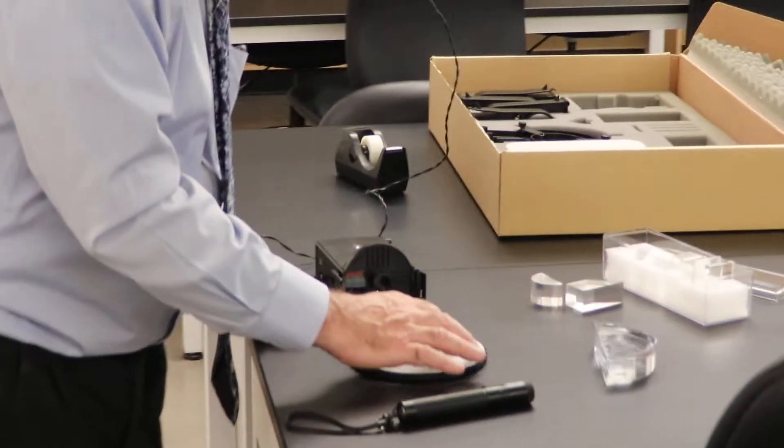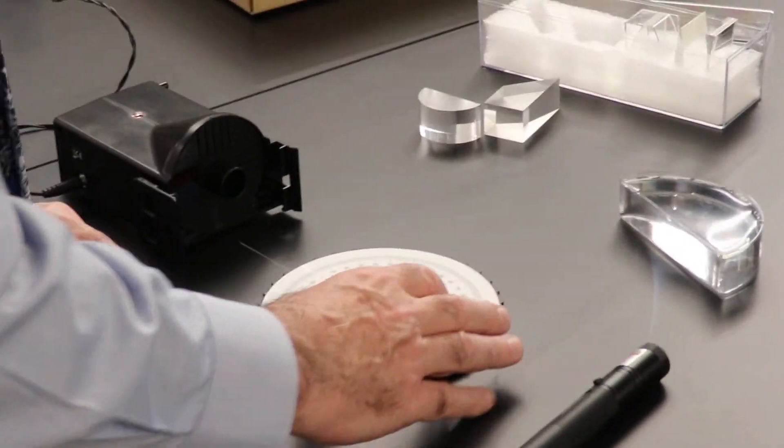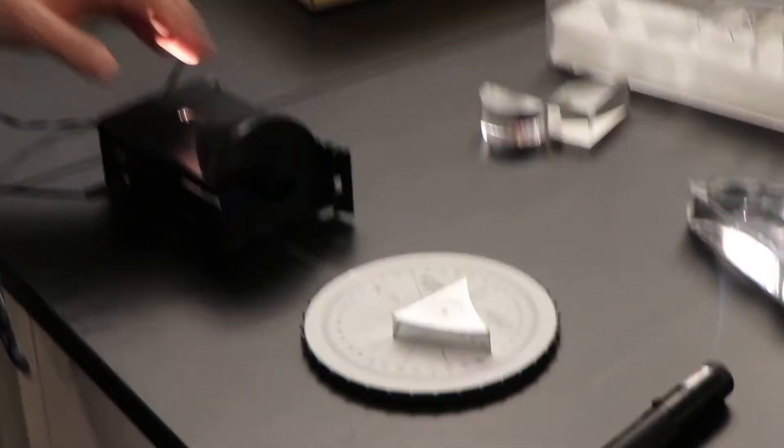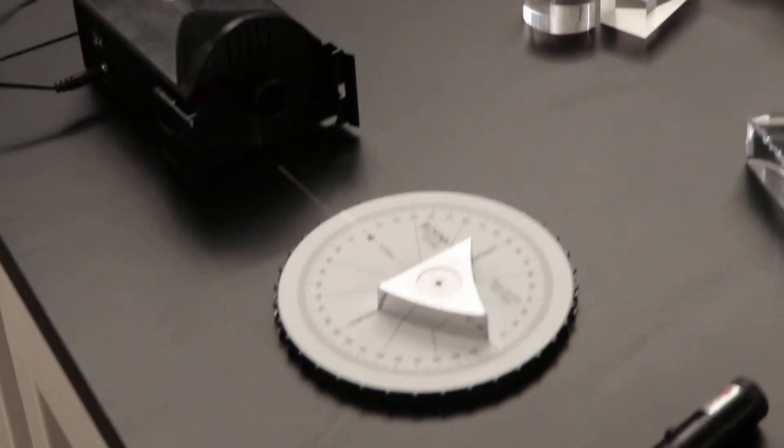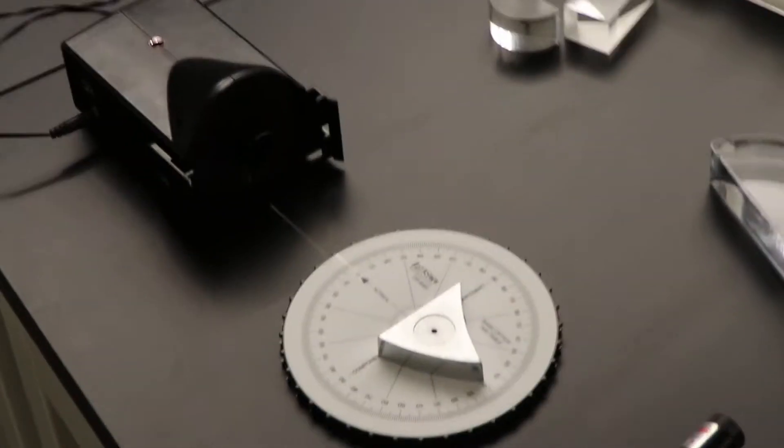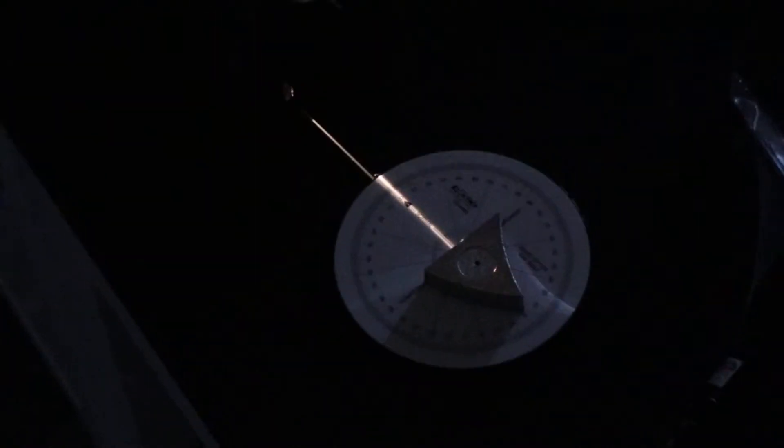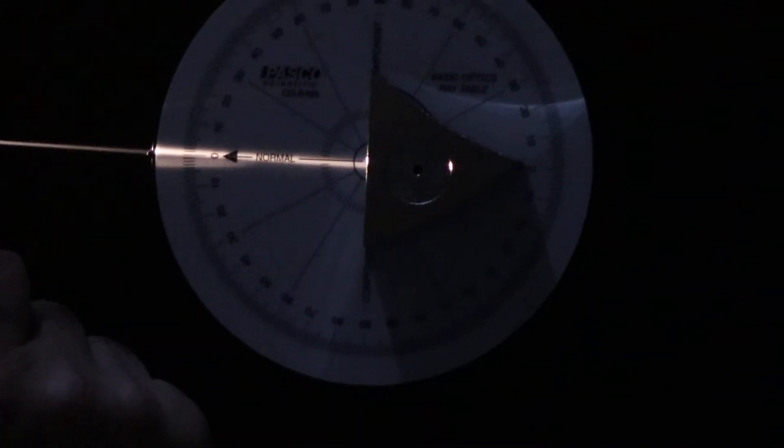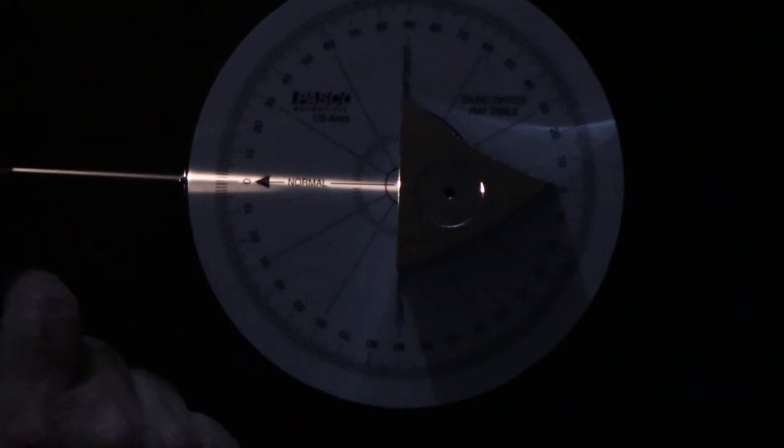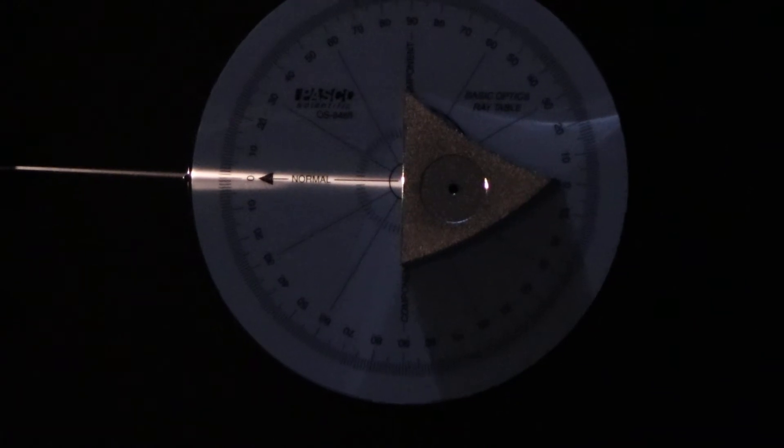We're just going to demonstrate it. And then we'll give you the data for the experiment. I'm going to turn the lights out. Can you see it there? Yes, it's coming back into focus now. Looks really good. You can see the light hitting the optics table right there at zero degrees. In fact, you might even be able to read that it says normal right there.